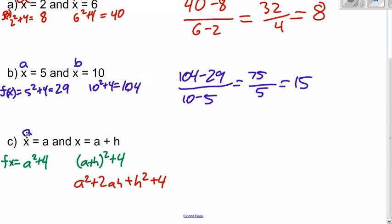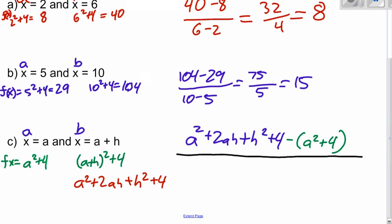So now, again, we call this first point a, the second point b. So it's f of b minus f of a. So a squared plus 2ah plus h squared plus 4, minus f of a, a squared plus 4, over b minus a, a plus h minus a.